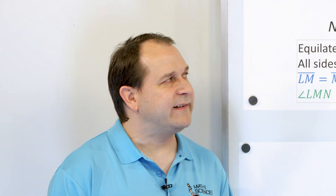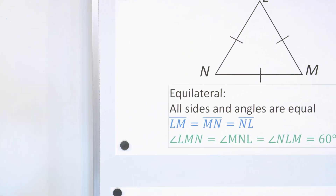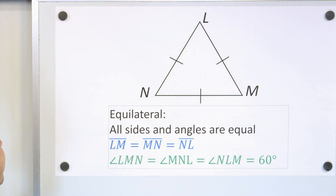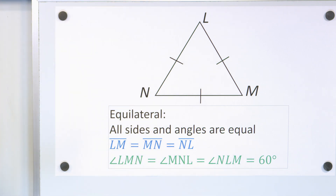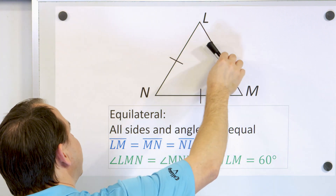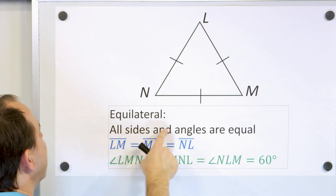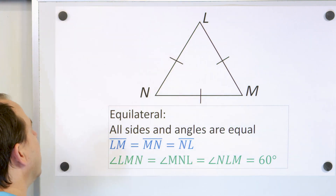Trust me — when you go far enough in math, we'll use that fact constantly over and over. So let's talk about some different kinds of triangles. The triangle that's the easiest to understand is called an equilateral triangle. Equilateral just means that all sides are equal.